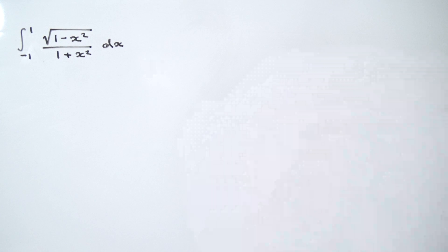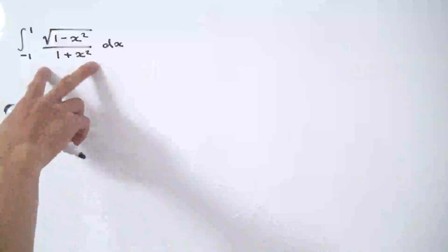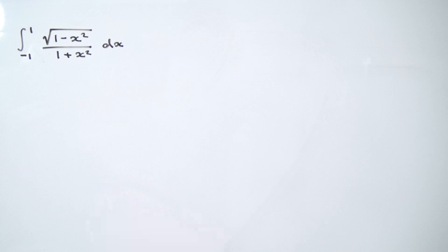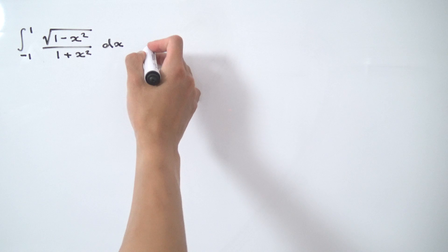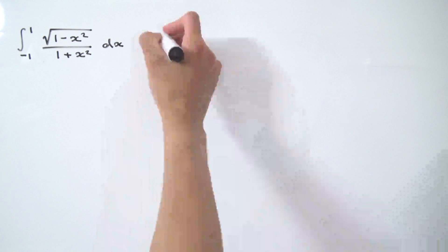Greetings everybody. Today we're going to be evaluating this definite integral running from minus one to one of the square root of (1 minus x) divided by (1 plus x). This is another one of those dog bone contour examples that I've done a couple times on this channel, and it was requested by one of my viewers. I also saw it on Stack Exchange. It's a pretty nice example where you have to be careful with branch cuts.